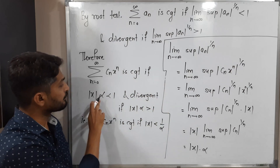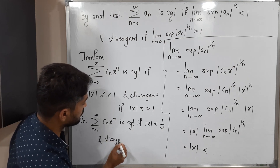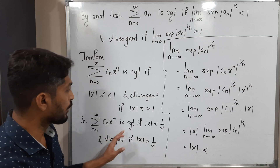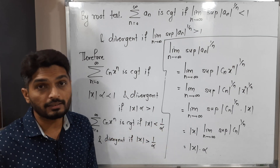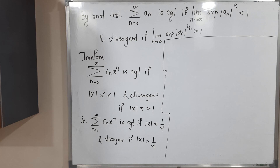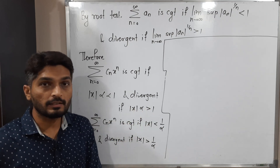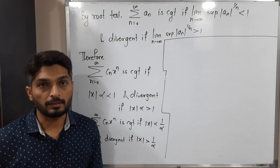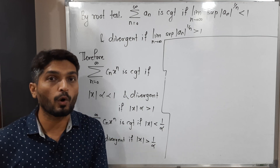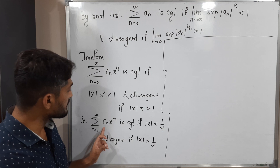Similarly, the series is divergent if |x|·α > 1, which means |x| > 1/α. Note that we are dividing by α here. One might worry about the sign of α, but since α is defined as the limit supremum of |cₙ|^(1/n), and there is a modulus, α cannot be negative. So the inequality direction is preserved.